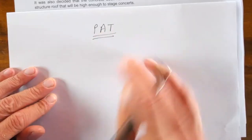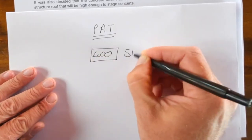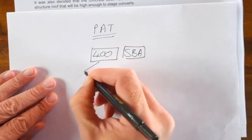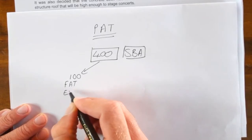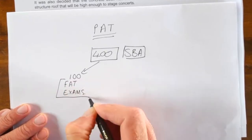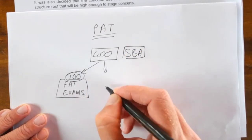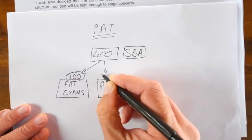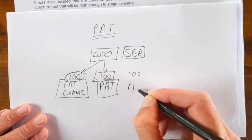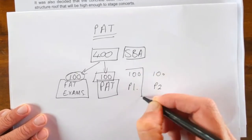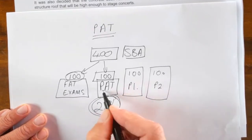In EGD you've got 400 potential marks up for grabs in your school-based assessment. The first hundred marks come from your FAT tests, your exams, and all the drawings you do in the year. Your second hundred marks come from your PAT — this task we're discussing right now. The last 200 marks come from Paper One and Paper Two in November, giving you 25% of your year mark from this PAT.